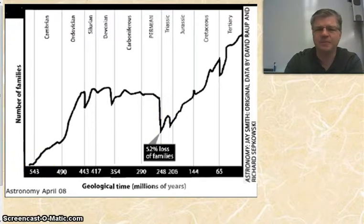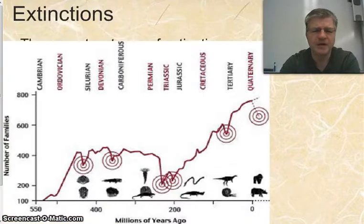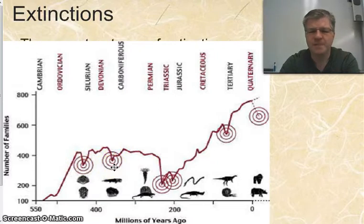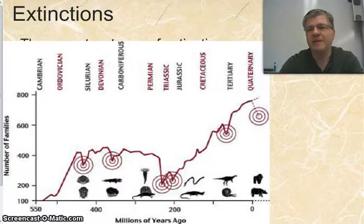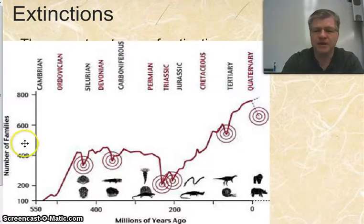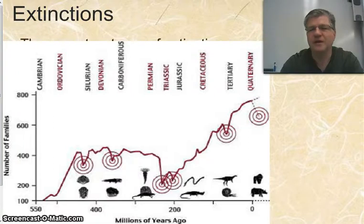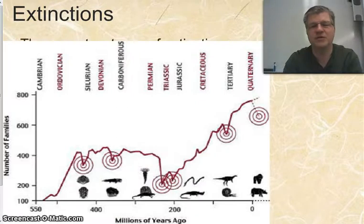A second graph shows the same data again — number of families over time for the same rough half-billion years — and here they've targeted the mass extinctions with little bullseyes. Most geologists and paleontologists refer to the five mass extinctions of the past, and you can see those targeted here. This graph also shows a sixth one, which is current times. It's kind of scary to think about the fact that we are actually plotting ourselves in a mass extinction brought about through human activity as a major event in the environment. We'll talk more about that later.